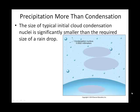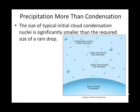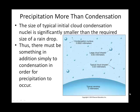Those cloud condensation nuclei are really pretty small. They're 0.0002 millimeters when they first form — though they may not be drawn to scale in this figure. A large cloud droplet is many times larger than that. So we need to talk about how we get from something so small to something larger, and ultimately, precipitation in the form of rain needs a certain amount of mass and size.